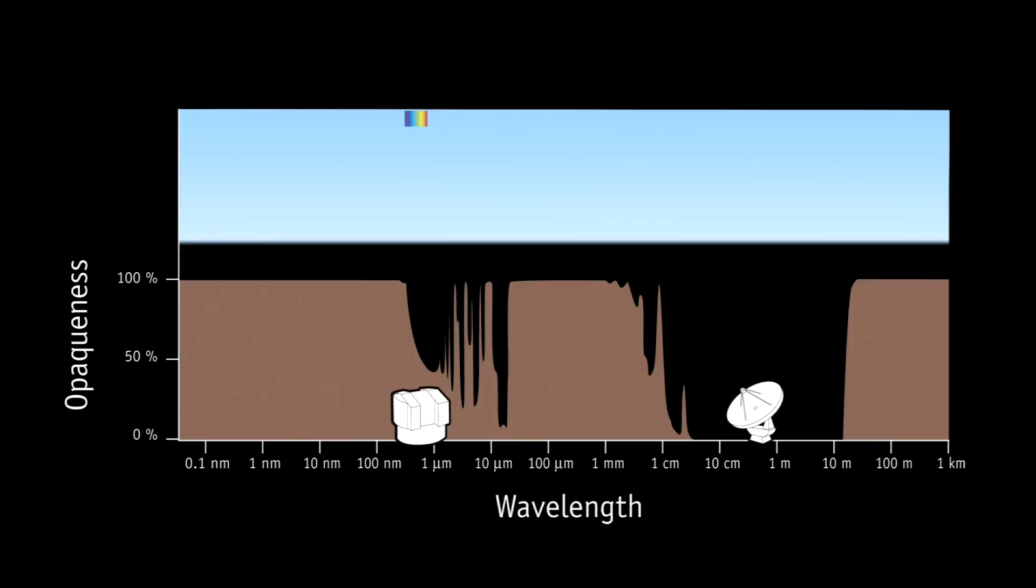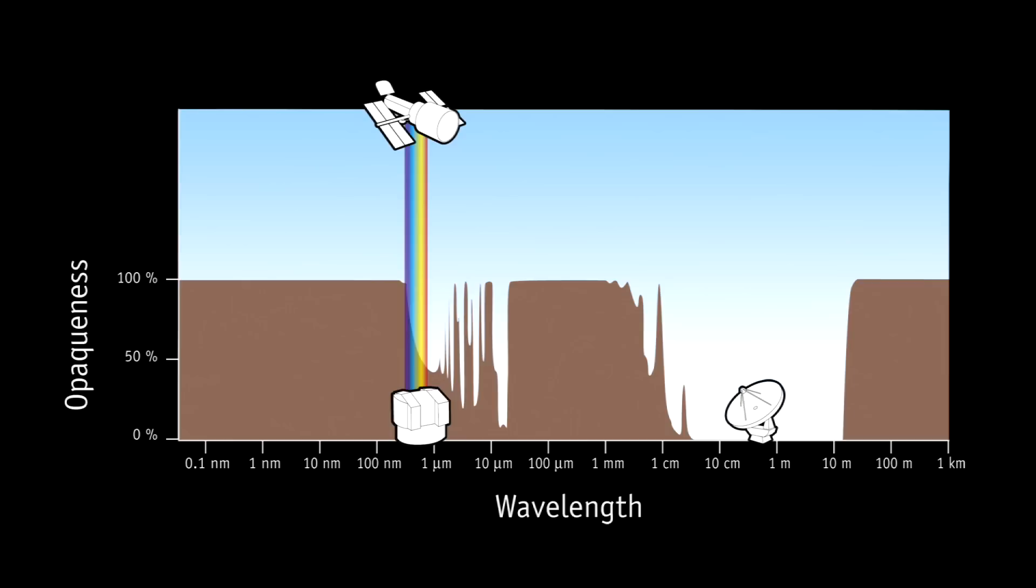On the other hand, the atmosphere blocks certain wavelengths of light. Only space telescopes, like Hubble, that fly above the atmosphere, can access the ultraviolet and infrared parts of the spectrum, which are invisible from the ground.